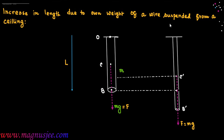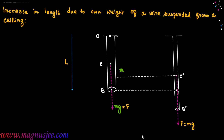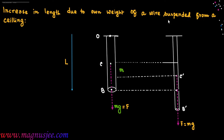Here F equals Mg is the deforming force, and Mg is the own weight of the wire which acts from center of gravity C prime. Due to the elongation of the wire, the center of gravity shifts from C to C prime. C is the initial position of the center of mass or center of gravity of the wire before elongation.